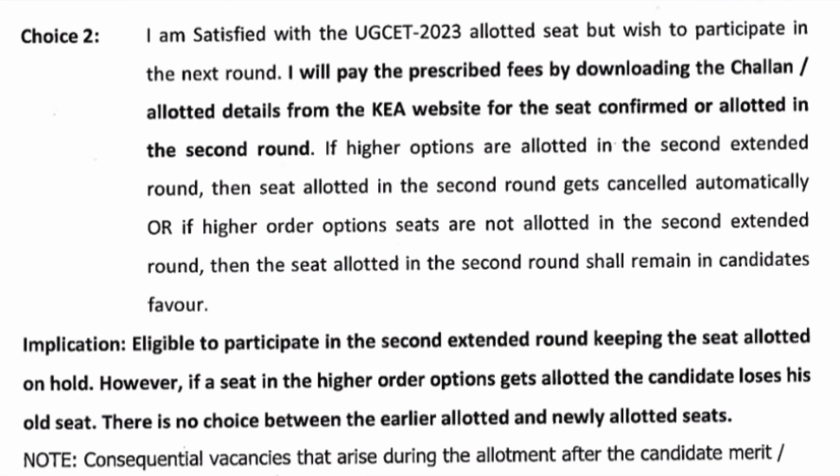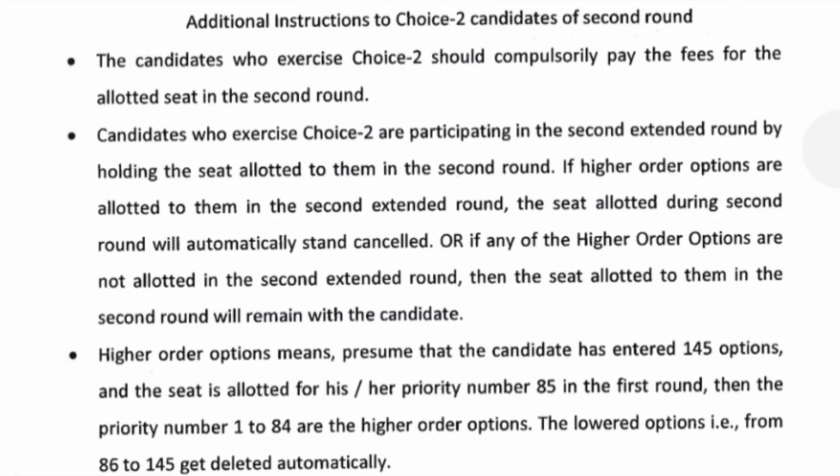Choice 2 students don't need to report to college but must pay the fees to be eligible for the second extended round of counseling. Choice 2 students are eligible to participate in the second extended round by keeping the allotted seat on hold. If they get a better seat in the second extended round they can join the new seat, but if they don't get any new seat they can join the old seat which is on hold. However, if you get a new seat in the second extended round, you have to accept it — you cannot go back to the old seat.